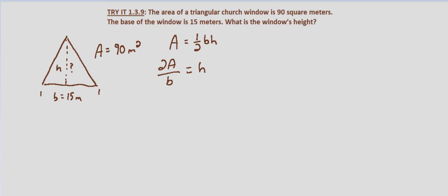Solved for height we get 2 times the area divided by the base. So H the height equals 2 times our area 90 square meters, divided by the base which we know is 15 meters.